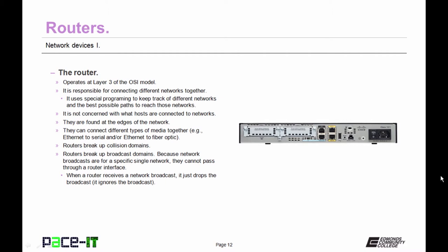Like the bridge, routers can connect different types of media together — for example, an Ethernet signal coming in and being transformed into a serial connection, or Ethernet to fiber optics, and so on. Routers do break up collision domains, and routers also break up broadcast domains. Because network broadcasts are for a specific single network, they cannot pass through a router's interface. So when a router receives a network broadcast, it just drops the broadcast, because broadcast traffic is only significant for the local network, not for remote networks.